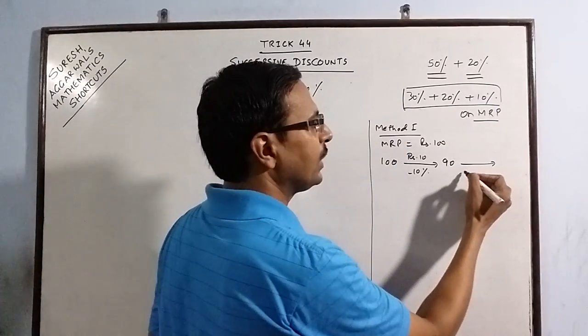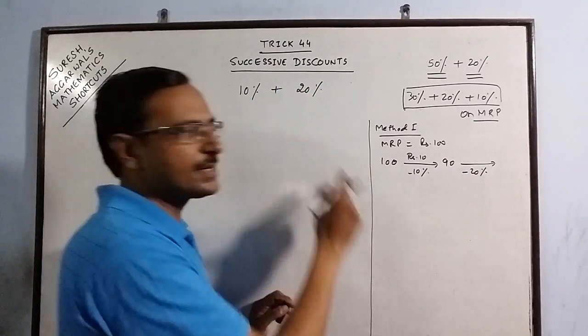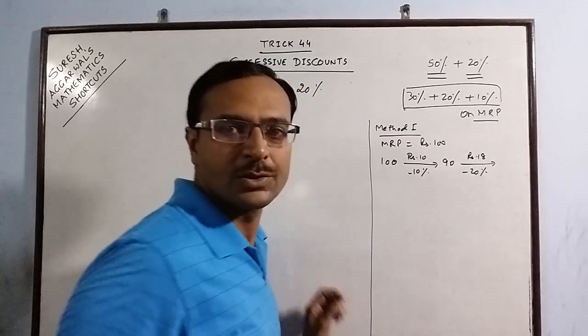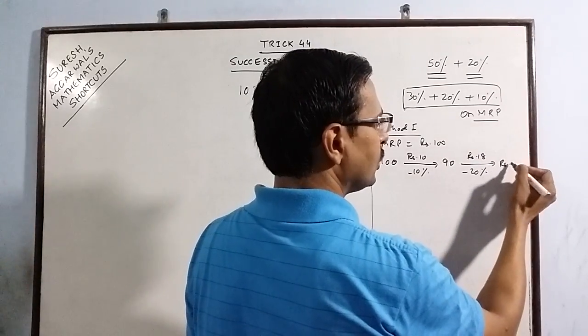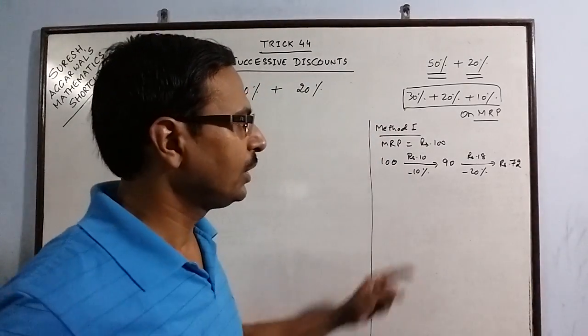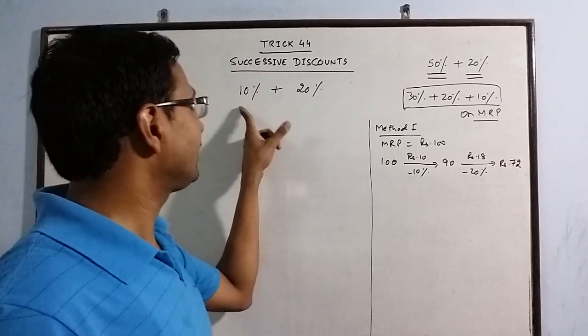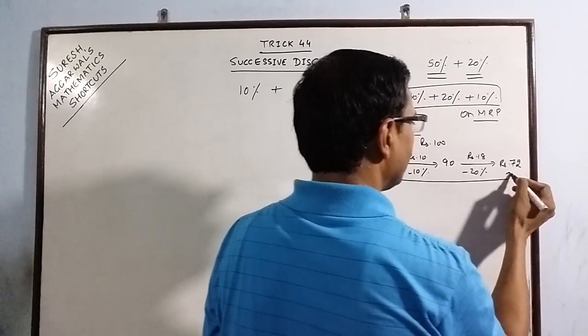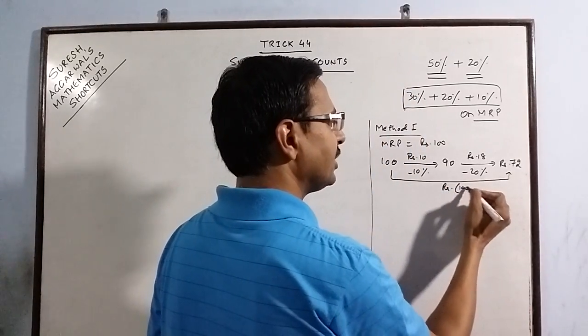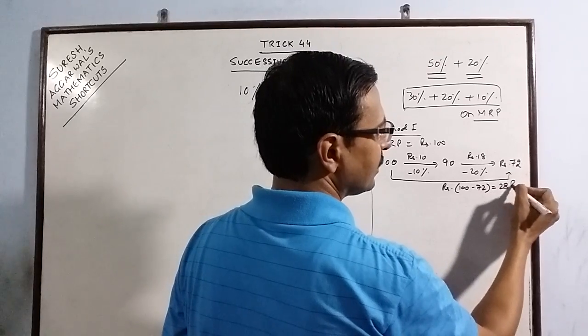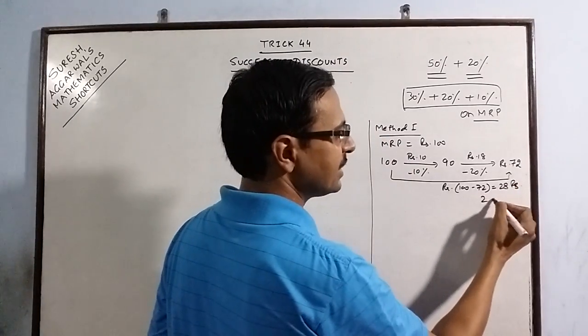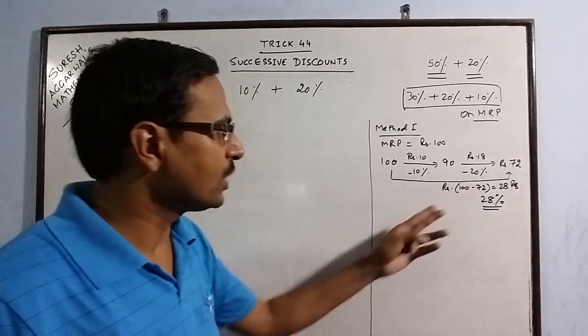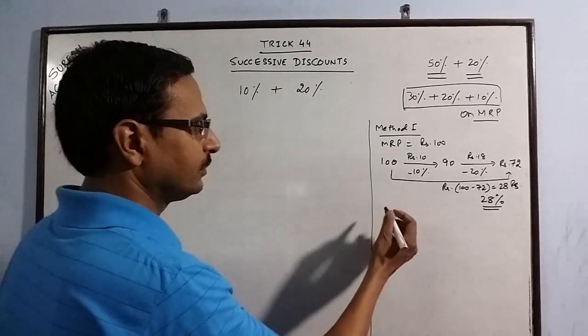Now on Rs.90, you get a discount of 20%, further discount of 20%. So 20% of Rs.90 is Rs.18. So 90 minus Rs.18 is Rs.72. You will have to pay Rs.72 in place of Rs.100 when you get successive discounts of 10% and 20% on the MRP. So this discount is Rs.100 minus Rs.72, that is Rs.28. So Rs.100, so 28% discount you have got. See, 10 plus 20 totals up to 30%, but actual discount is 28% only. This is one method.